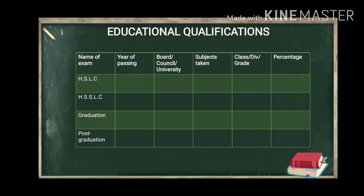The chronological order of exams begins with HSLC, then higher secondary, then graduation (which can be BA, BSc, or any other stream), and finally post-graduation (PG). Some jobs demand only graduation, so PG need not be added in those cases. However, for a teacher's job, you definitely need a PG in the respective subject.